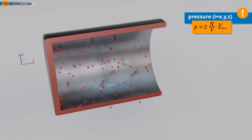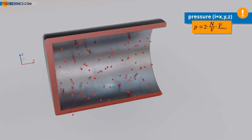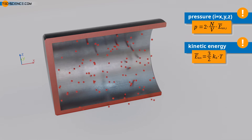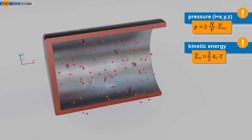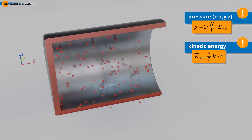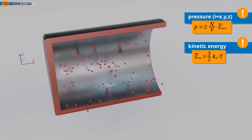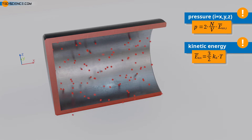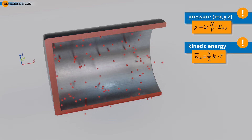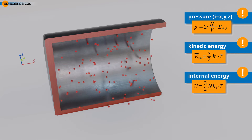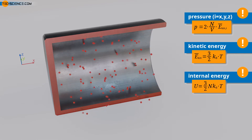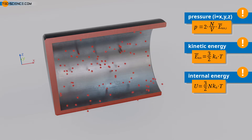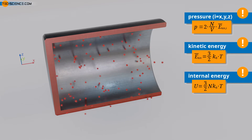In the video on the relationship between pressure and temperature, it was shown that the mean kinetic energy of a molecule is related to thermodynamic temperature by E_kin = (3/2) k_B T, where k_B denotes the Boltzmann constant. Here, E_kin is the total kinetic energy of a molecule, not limited to one direction. The total energy of an ideal gas in the form of motion, generally referred to as internal energy U, is obtained by multiplying the mean kinetic energy of a single molecule by the total number of molecules N.